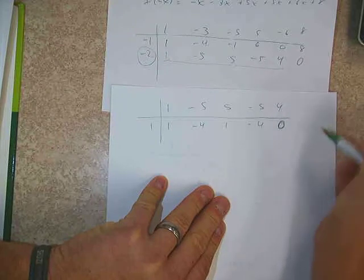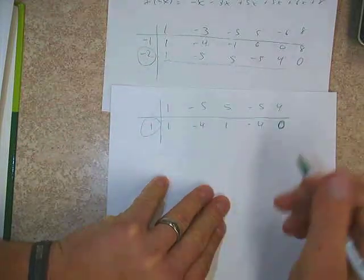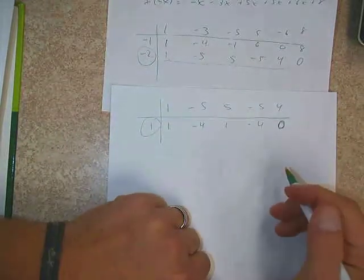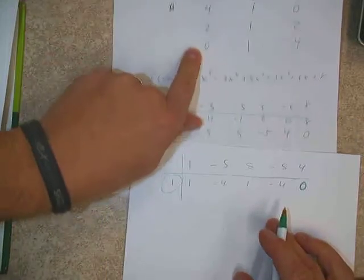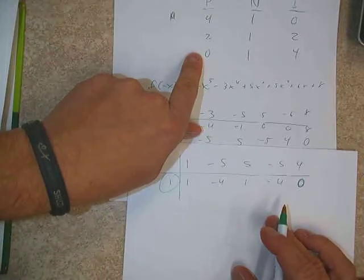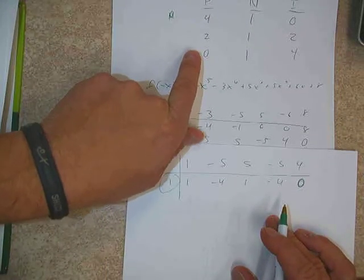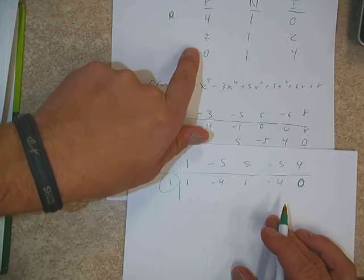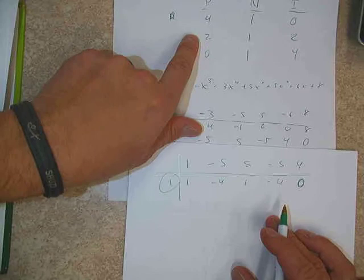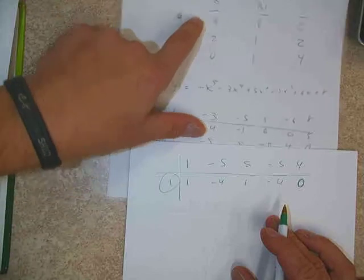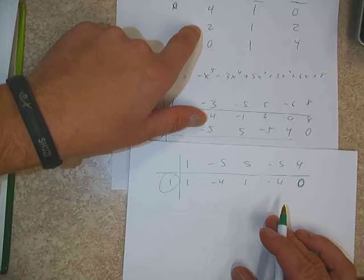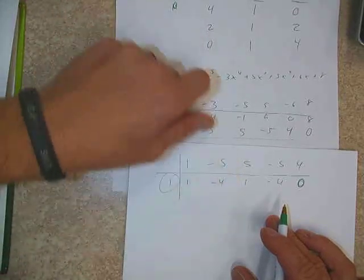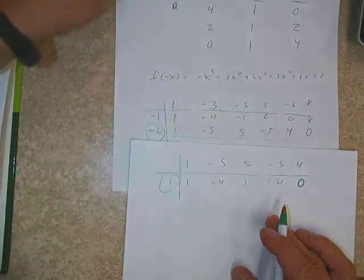So again, these two would give us negative 4, those two would give us negative 4, and that would give us a 0 remainder. So there's another zero. Now we know it's not the 0 positives, 1 negative, and 4 imaginary scenario.